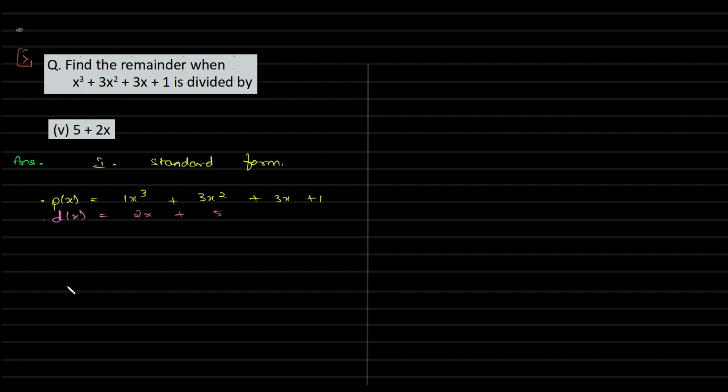Second, d(x) should be equated to 0, so we have 2x + 5 = 0, which gives us x = -5/2.